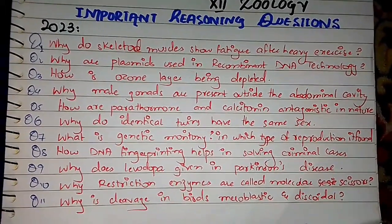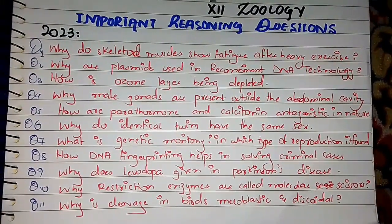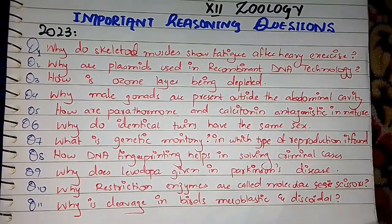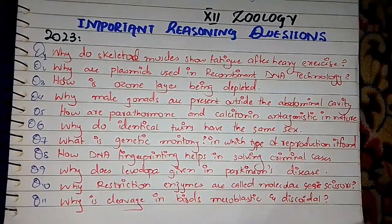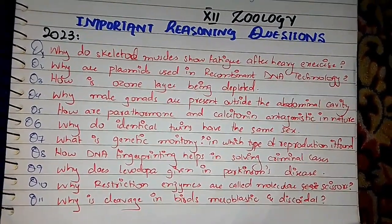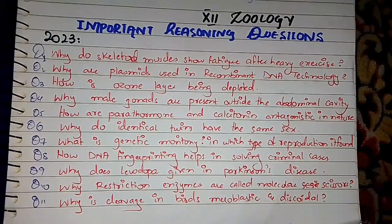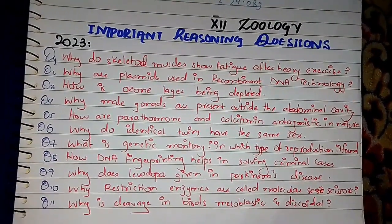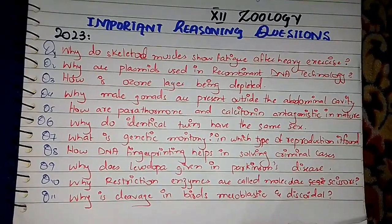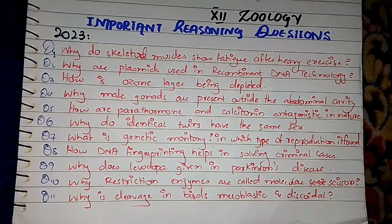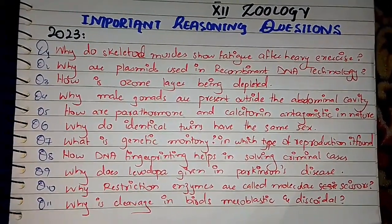Identical twins have the same sex. They develop from the same zygote which splits into separate blastomeres and then they develop into different individuals. Question number 7: What is genetic monotony and in which type of reproduction is it found? Genetic monotony is a phenomenon in which generation after generation exactly similar offspring result.